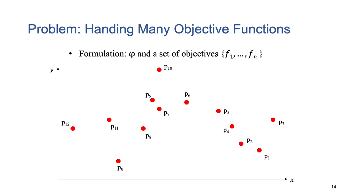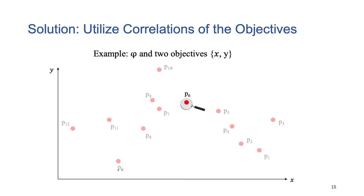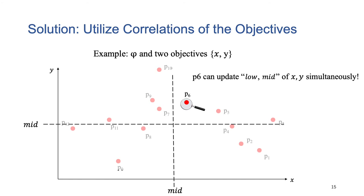The problem is that for OMT-based symbolic interval abstraction, there may exist many objectives. The binary search style algorithm may require a huge number of SMT solver calls. To address the problem, our key idea is to utilize the correlations between different objectives. For example, suppose we have two objectives, x and y, and suppose that in the first round, the solver gives us a model P6. Actually, using the model P6, we can update the low and middle of x and y simultaneously.